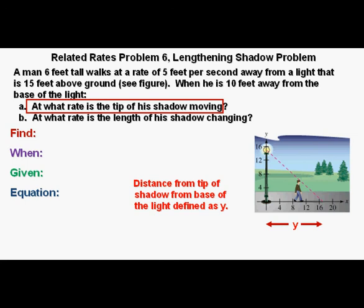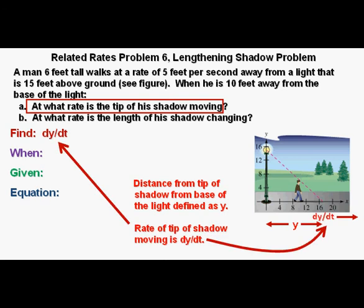we'll have to define the distance from the base of the light to the tip of the shadow, and we'll call that distance y. And so the rate of the tip of the shadow moving is the change in y over time, which we'll call dy/dt.